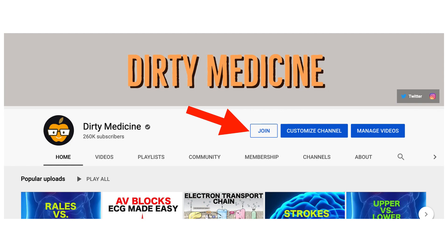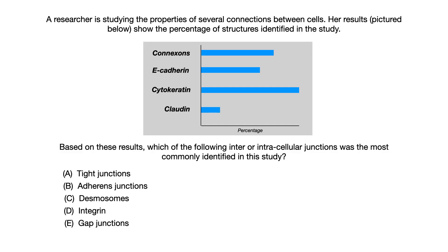Now let's get into today's practice question. A researcher is studying the properties of several connections between cells. Her results, pictured below, show the percentage of structures identified in the study. We've got this graph here showing us the percentage of different connections between cells that were identified in the study. Based on these results, which of the following inter- or intracellular junctions was most commonly identified in the study?